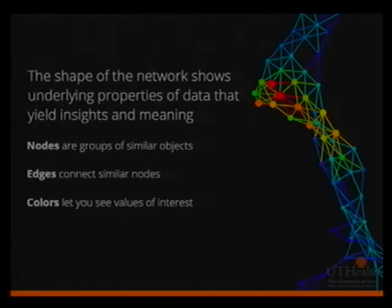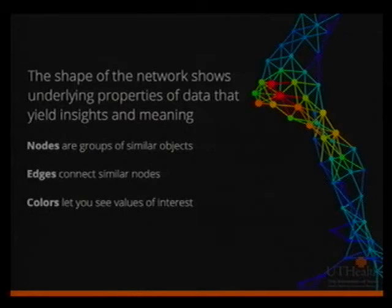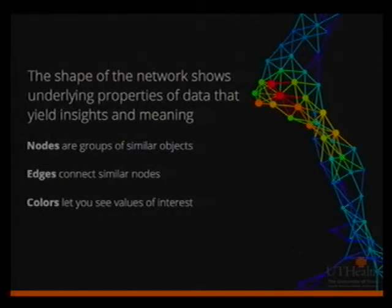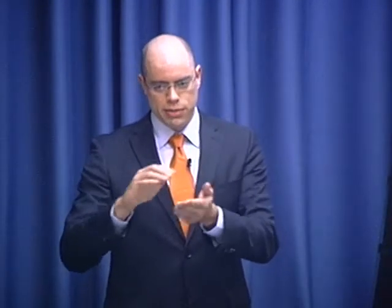Nodes are a group of similar objects in your dataset. You define some measure of similarity — a distance measure, a variation measure, or a distance-from-center measure — and choose how many nodes to create, and the software groups members into clusters based on that similarity. The key difference from clustering is that each member of your dataset can be included in more than one node, as opposed to clustering where every element belongs to a single cluster. In TDA, different elements can belong to more than one node.